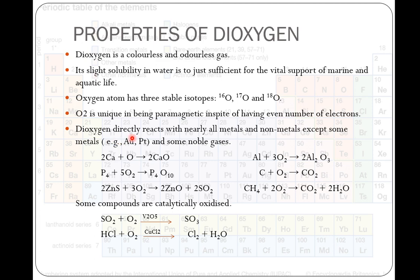Dioxygen directly reacts with nearly all metals and non-metals except a few metals and noble gases. For example, with calcium, it forms calcium oxide. With phosphorus, it forms phosphorus pentoxide. Aluminium gives aluminium oxide. Carbon gives carbon dioxide. Similarly, some compounds like zinc sulfide on oxidation give zinc oxide. Methane with oxygen forms carbon dioxide and water.